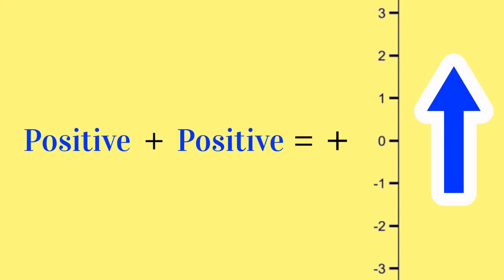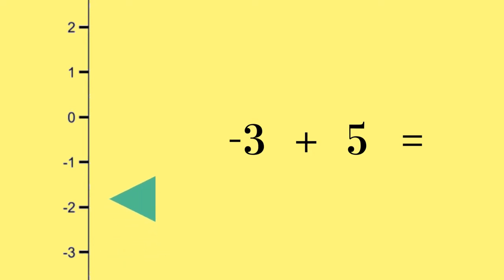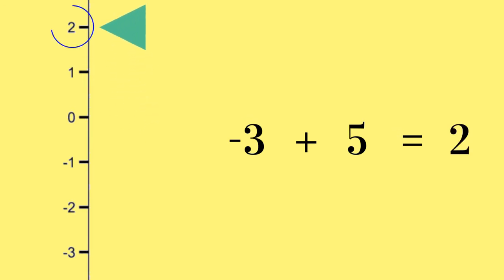The same is true if the first number is a negative number. For example, to work out negative 3 plus 5, you would start at negative 3 on the number scale and count upwards by 5 to reach your answer, 2.